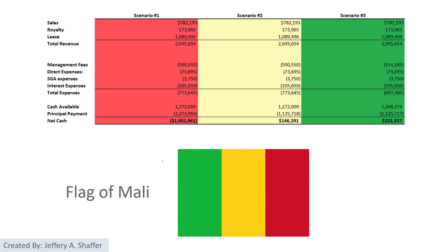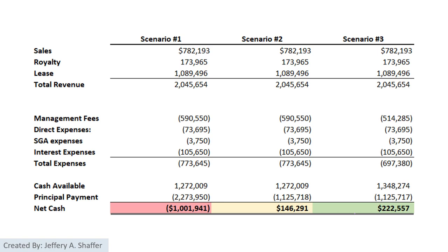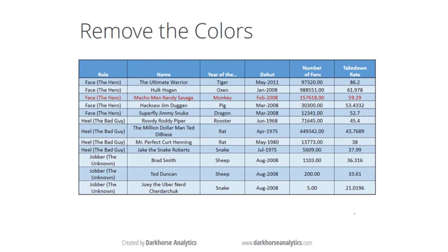We just need to highlight the most important numbers or the different numbers. This is another improved version. However, there are still some problems. The major issue is that we use black color as text on the red or green color, which makes the numbers harder to see. This is another improved version where we are using light highlight colors, so the text is easier to read. This is a great example of how we can improve data tables.